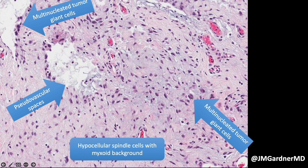Anytime I see a spindle cell tumor with myxoid change and I start seeing multi-nucleated cells, or cells that are kind of triangle-shaped — which is like the precursor to the multi-nucleated cells as they start looking triangle or stellate-shaped and then eventually become multi-nucleated — I use that as a clue for myxoid DFSP, because myxoid DFSP has a lot of overlap with giant cell fibroblastoma-type DFSP.